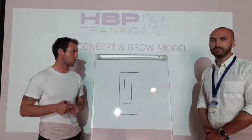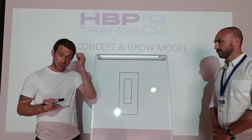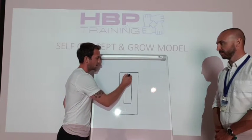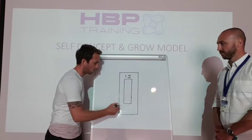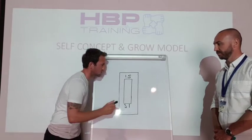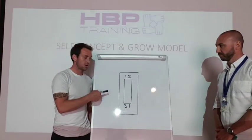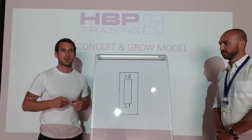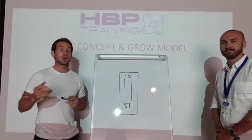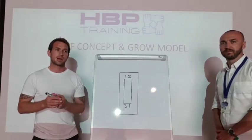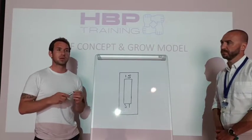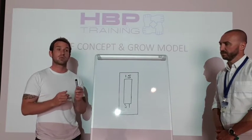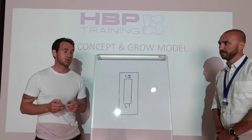So, the self-concept model — it starts off like this. At the top we've got the ideal self and at the bottom we've got your self-image. The ideal self is your perception of what you should be, how you'd like to be, what you think other people may think you should be. Perhaps you might be comparing yourself against peers that you think you should be achieving the same results against.